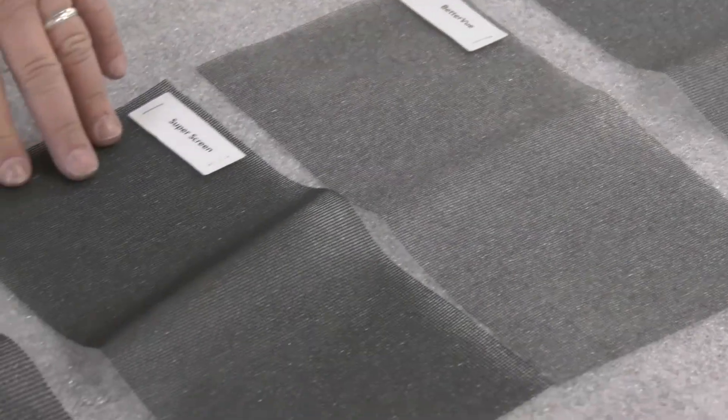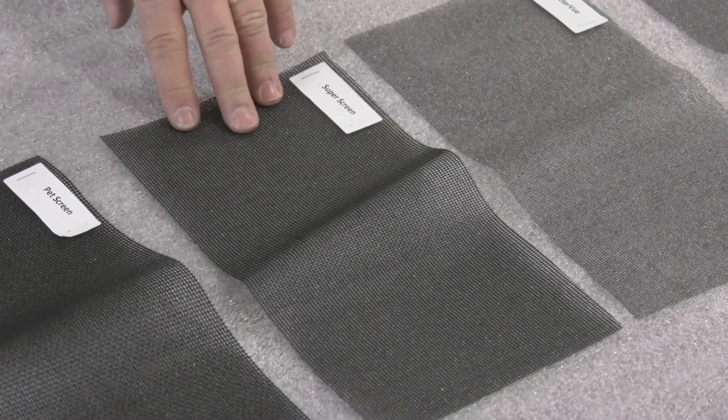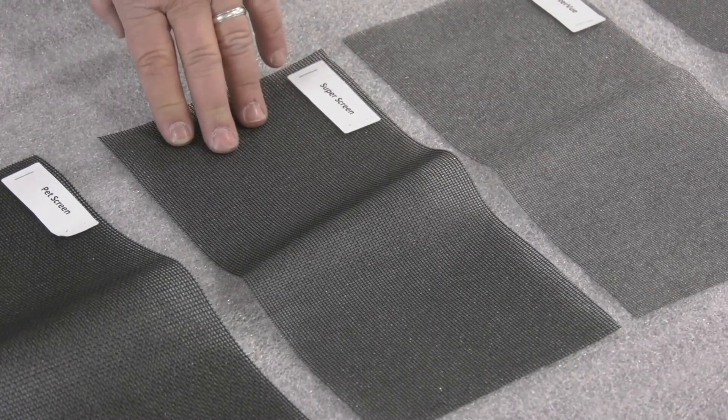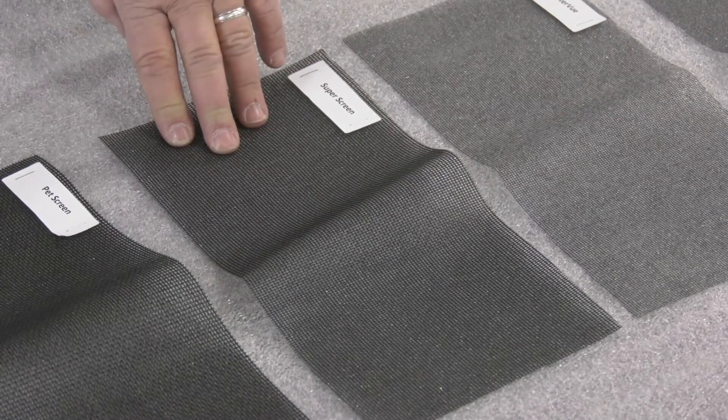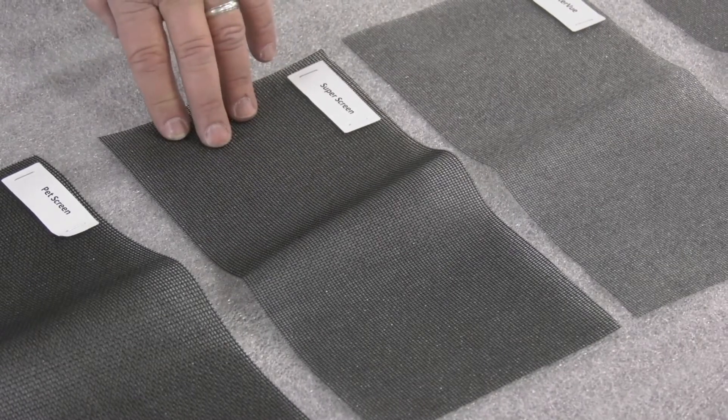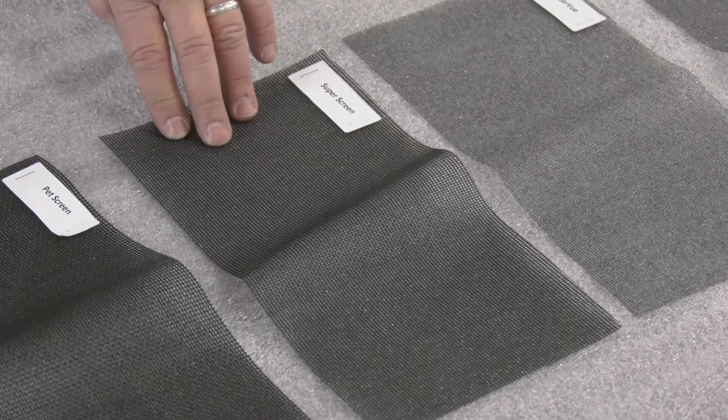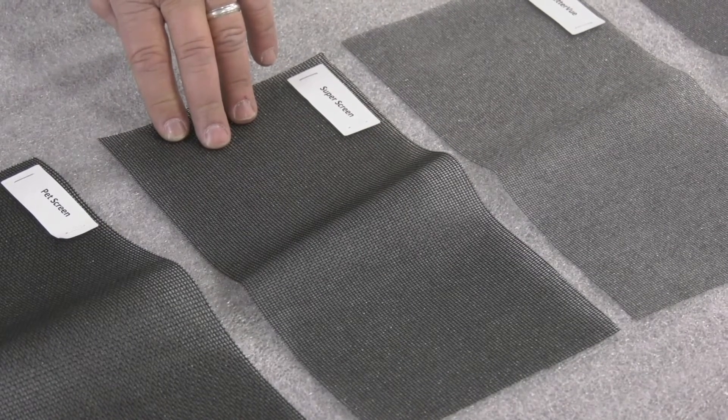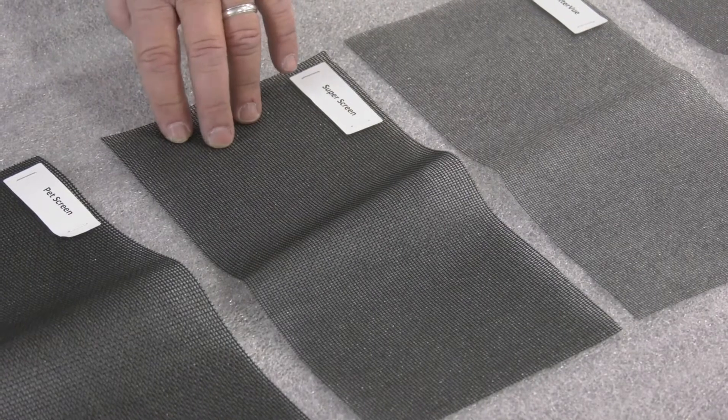Then you have your super screen. This is a heavy duty non-PET screen. It's three times stronger than charcoal fiberglass mesh. It's a 0.014 diameter wire, 17 by 14 mesh. It has a 10 year warranty and installs with a 0.310 flat spline. It's available in rolls from 2 foot wide to 126 inches wide.